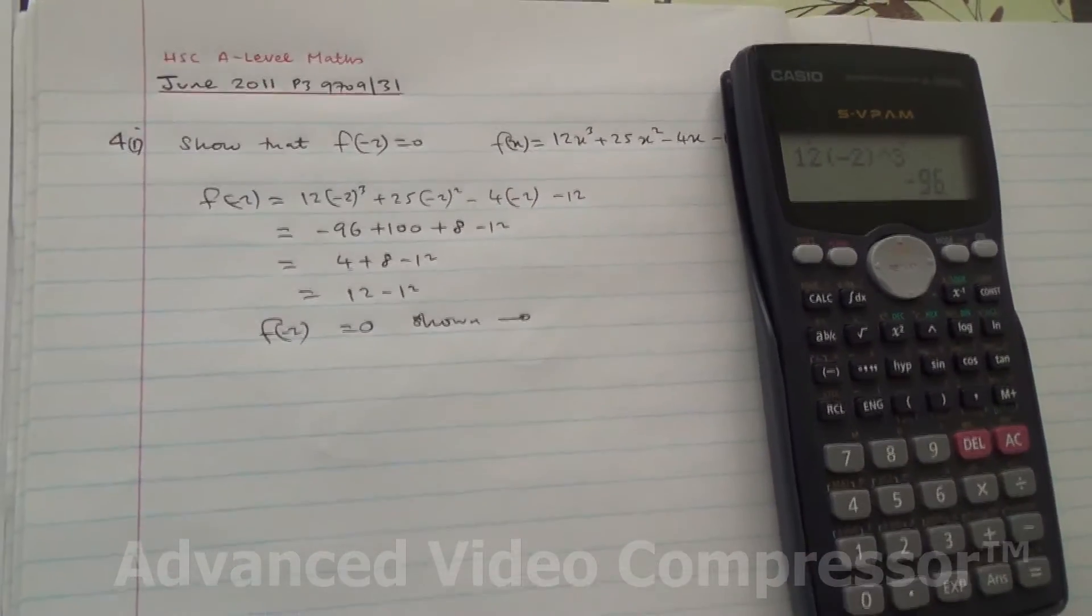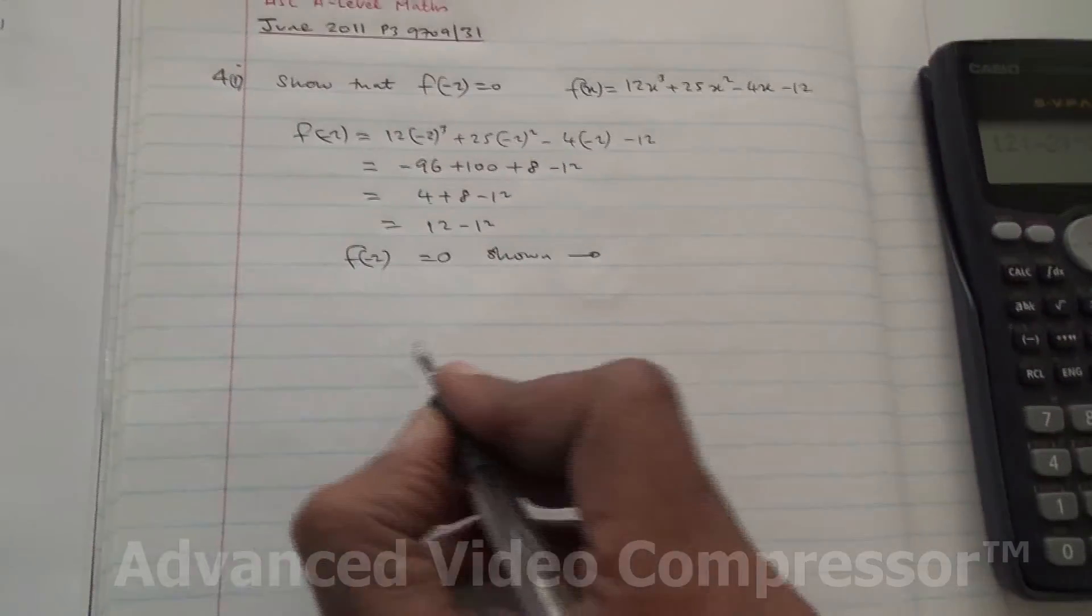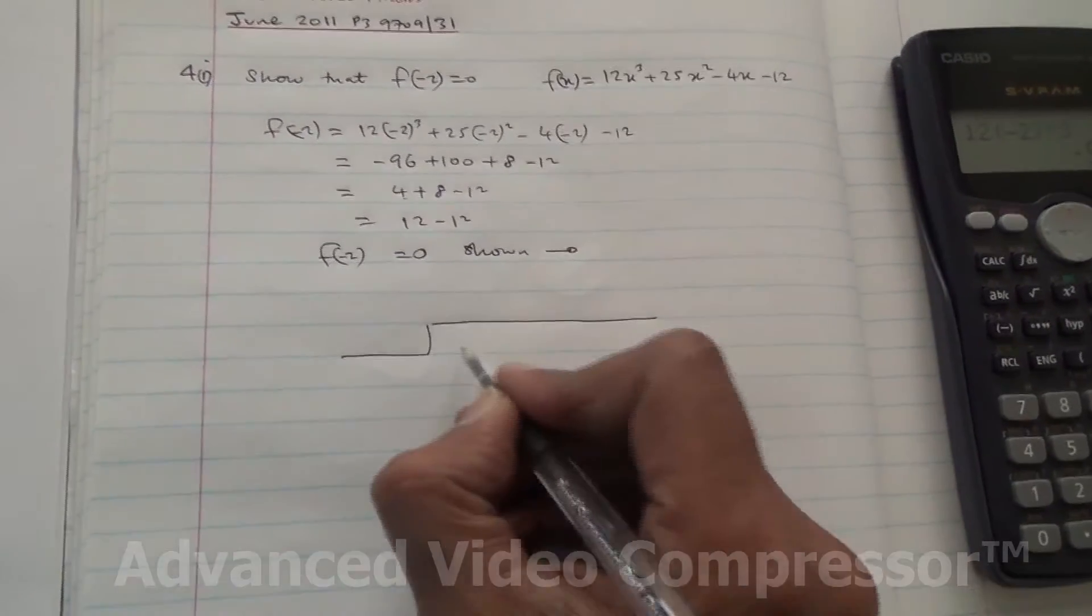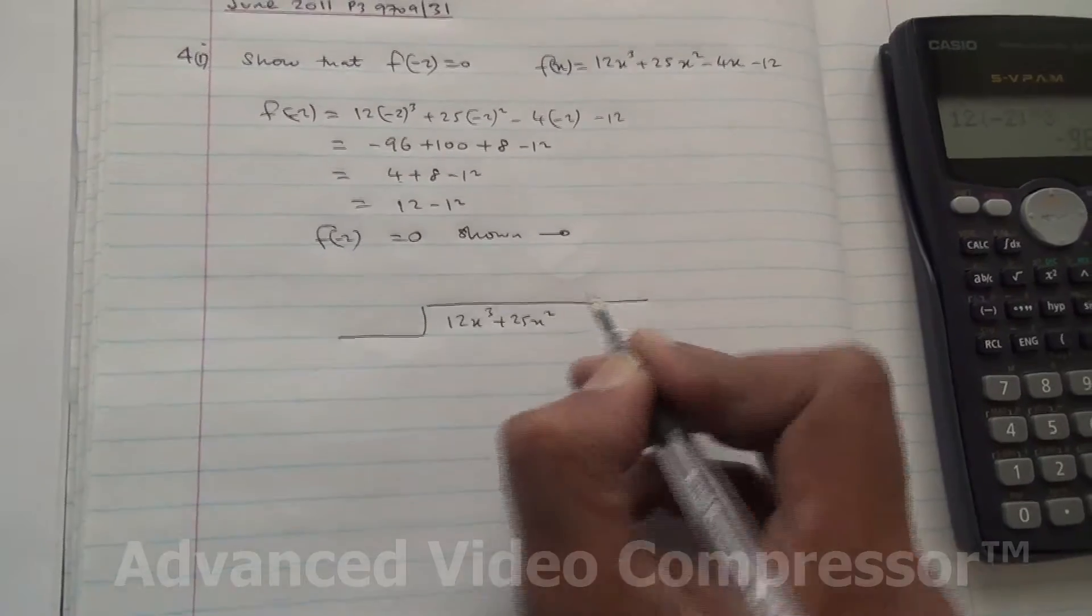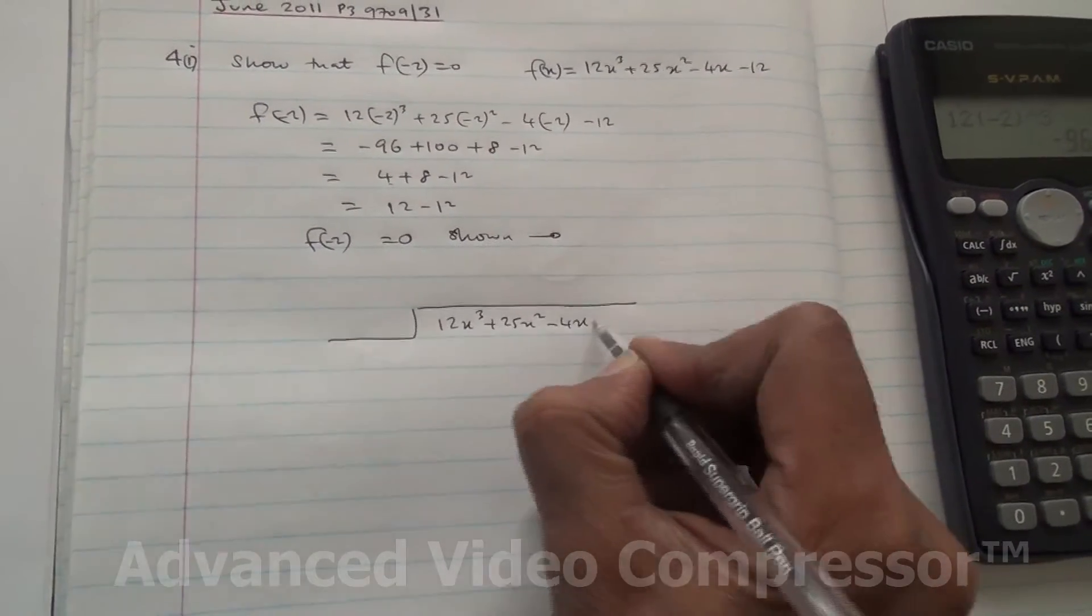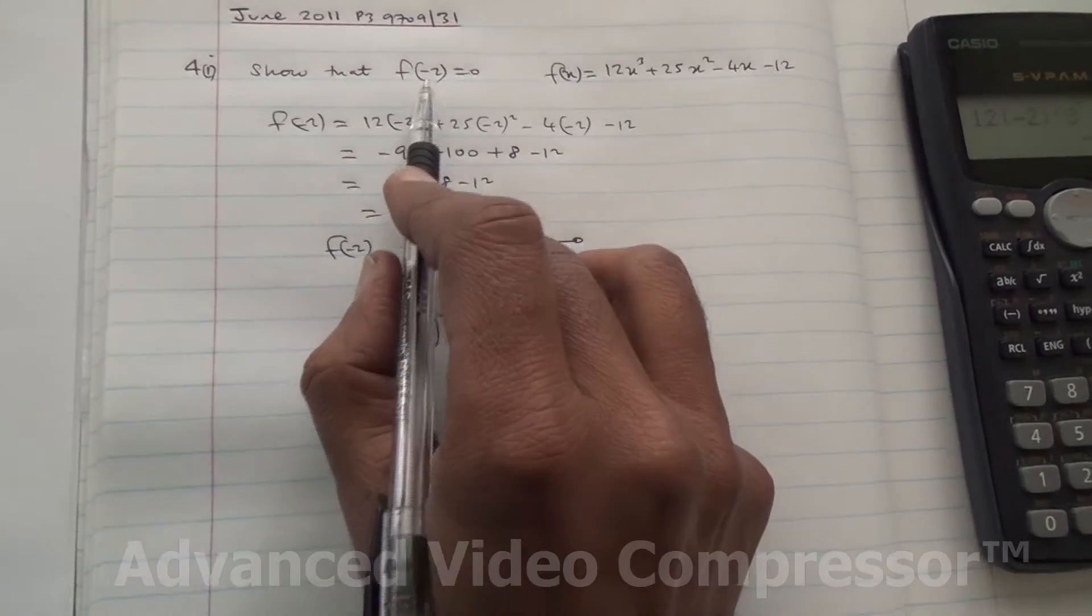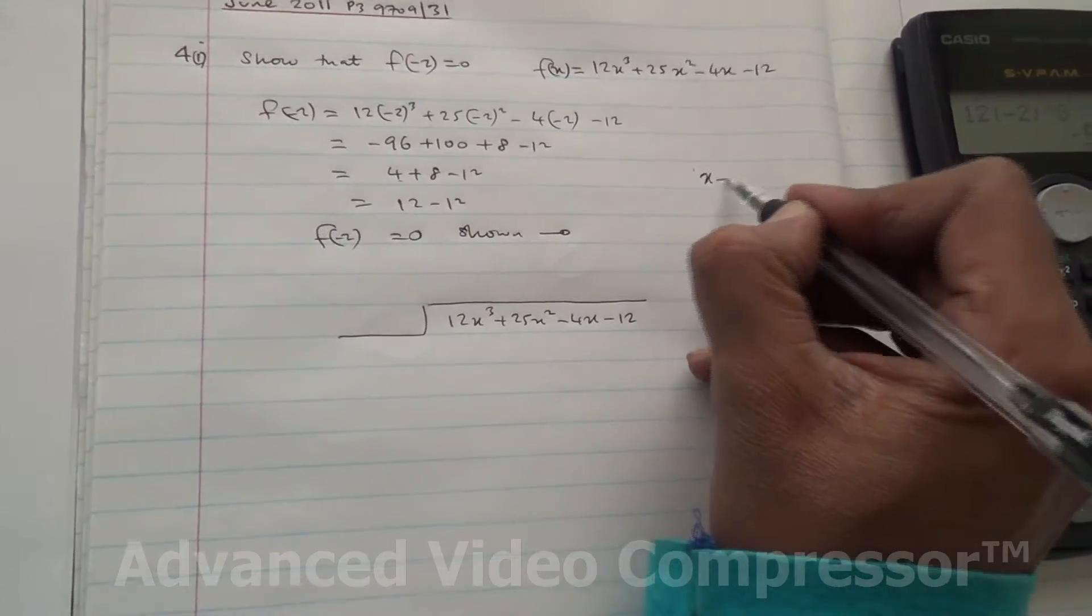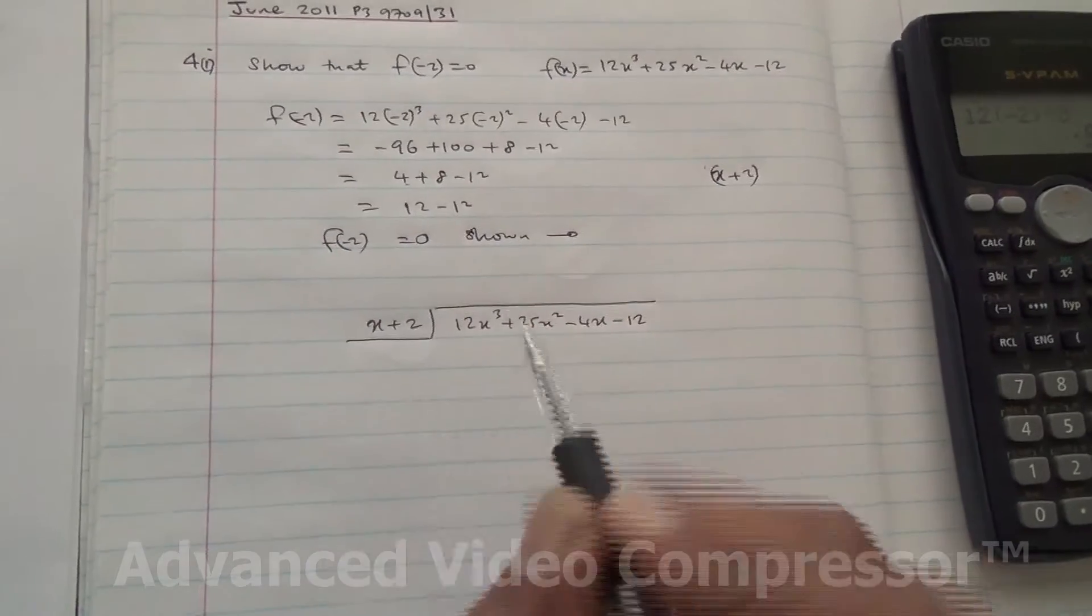But also we need to factorize the expression completely. To factorize this, we are going to perform a long division. We have got 12x cubed plus 25x squared minus 4x minus 12. We are going to be dividing by the factor. Since f(-2) equals 0, that means x plus 2 is the factor. Therefore, we are going to be dividing by x plus 2.